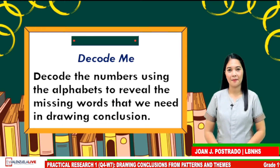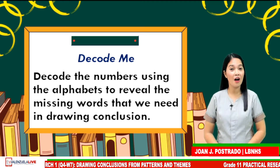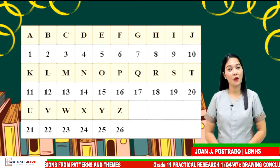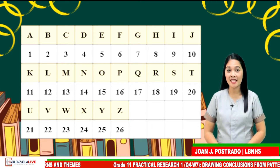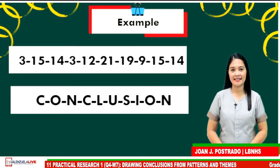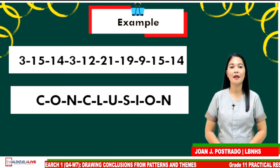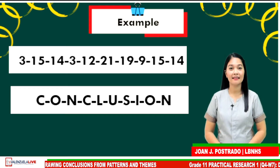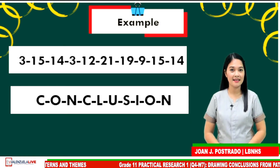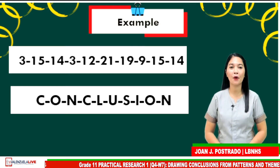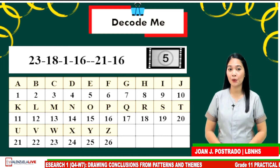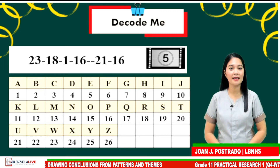Here are the mechanics of the game. Decode the numbers using the letters of the alphabet to reveal the words that we need in drawing conclusions. This will be your guide to decipher the numbers. We have the letters of the alphabet and the numbers 1 to 26. For example, number 3 stands for letter C, 15 is O, 14 is N, 3 is C, 12 is L, 21 is U, 19 is S, 9 is I, 15 is O, and 14 is N — these numbers reveal the word conclusion. You have 5 seconds to decode the numbers to reveal the word. Just type the word in the comments section.